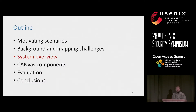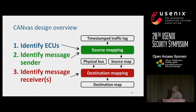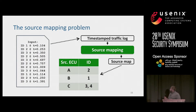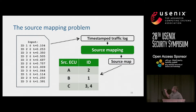Now let's look at the CANVAS system. We combined our first two goals — ECU identification and message sender — into a module called source mapping. Our third goal becomes another module called destination mapping. For source mapping, we take as input a data log of timestamped traffic from the car, and our goal is to produce a source map: a table of the ECUs and the set of IDs that they transmit. The question is: how can we link these IDs to the source ECU?